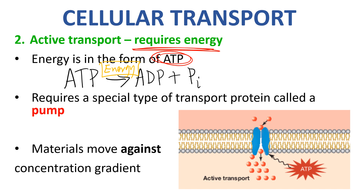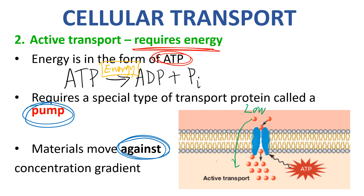That released energy is what this transport method needs. The second thing active transport needs is a special type of transport protein, similar to facilitated diffusion. The proteins required are called protein pumps. Think of it like pumping water up into a water tank — it's not going to happen naturally against gravity. Similarly, in active transport you're trying to move materials against their concentration gradient, pushing solute particles from an area of low concentration to an area of high concentration, and that takes energy.